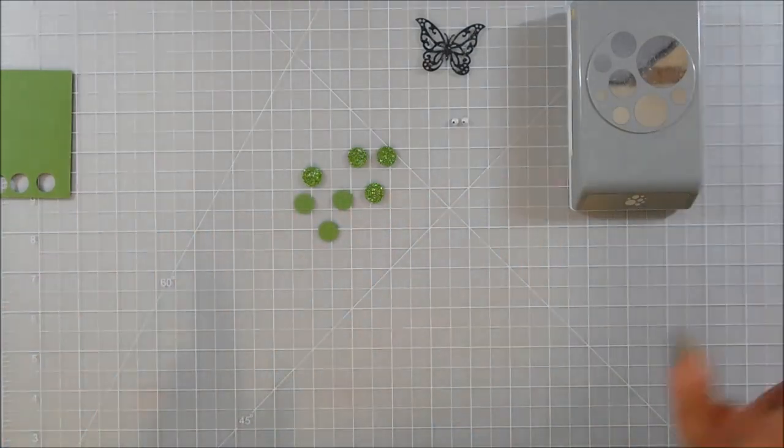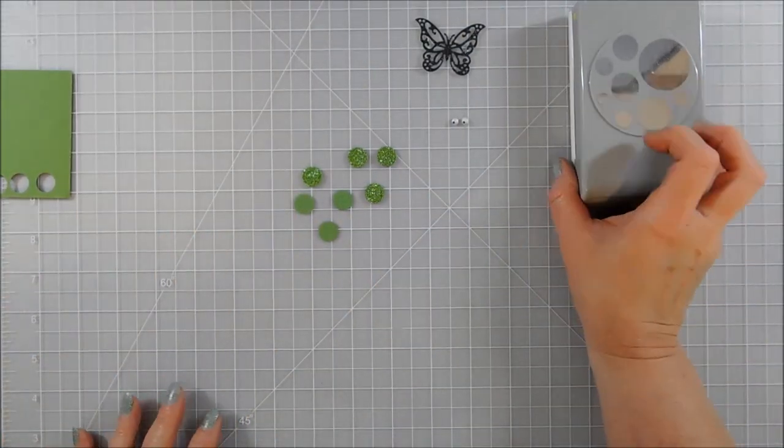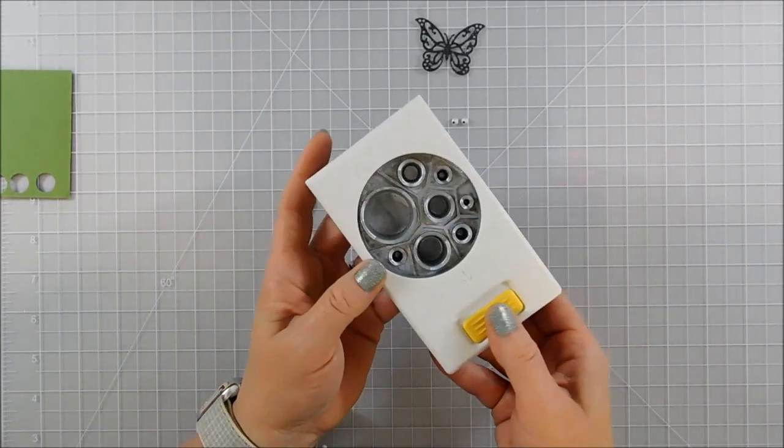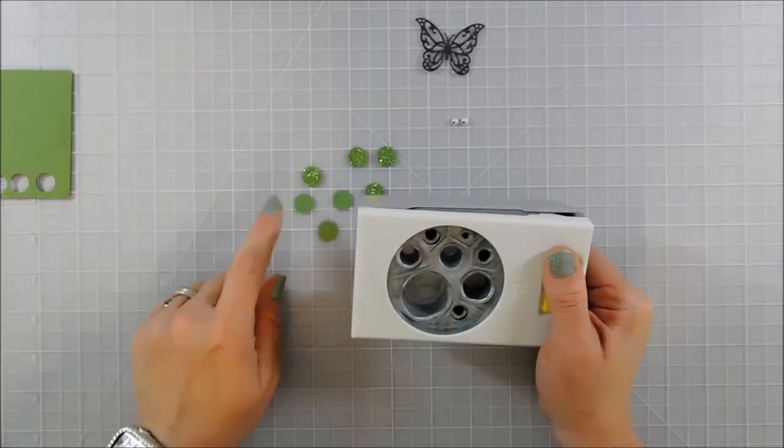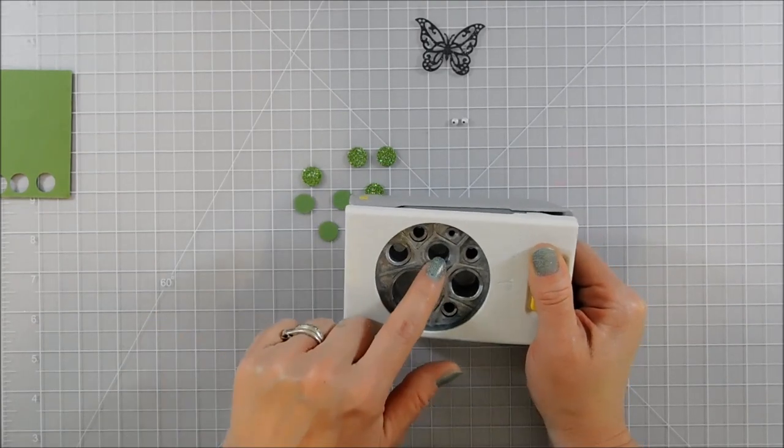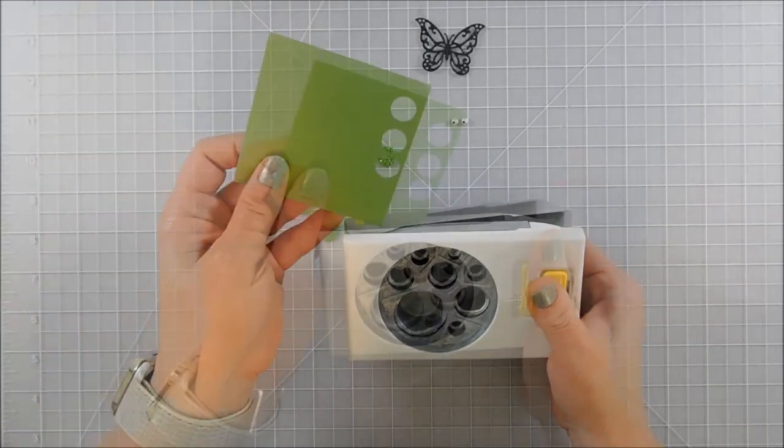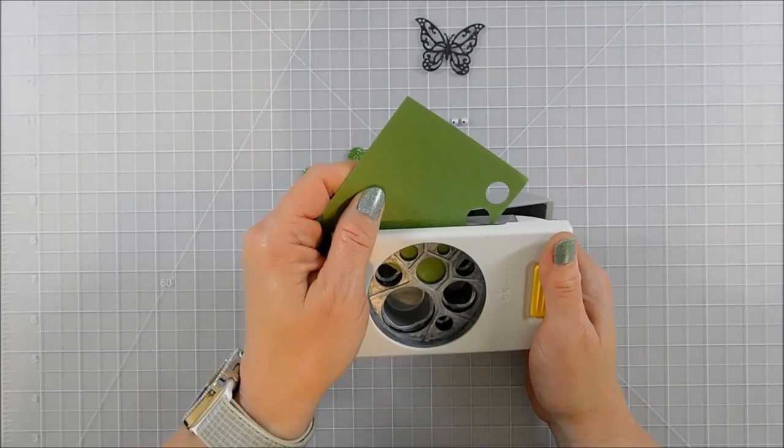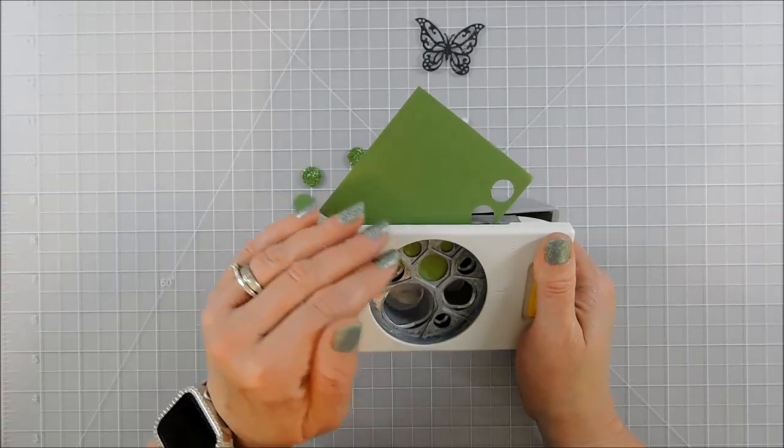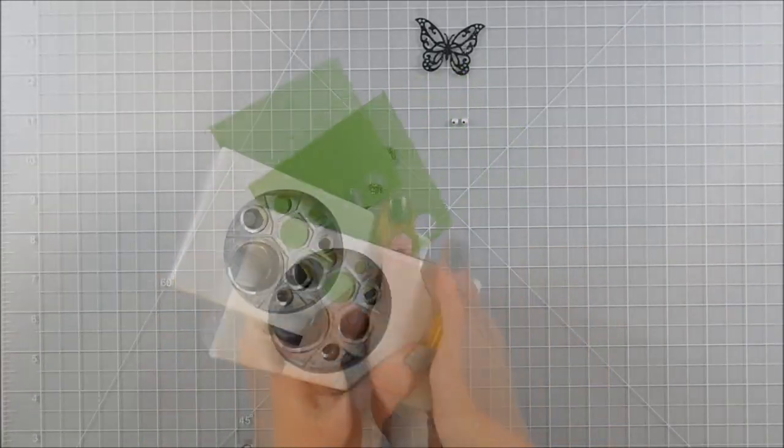Now for the head I'm going to want that just slightly larger so I'm using my confetti circles punch here. It's about five-eighths and I like to just stick the corner down in there so that I miss most of those holes because I don't want to punch out a bunch that I'm not going to use.